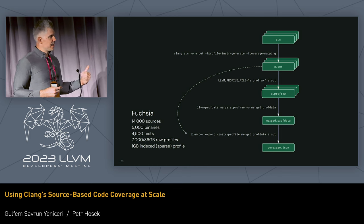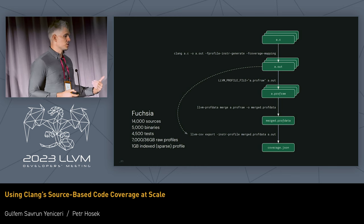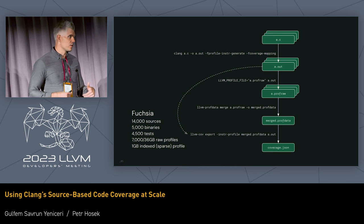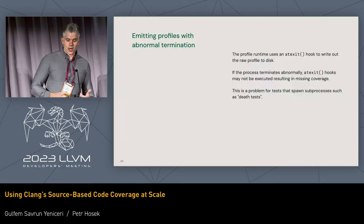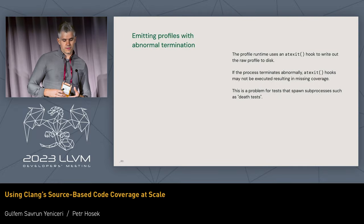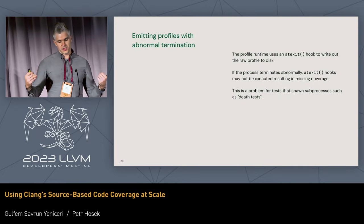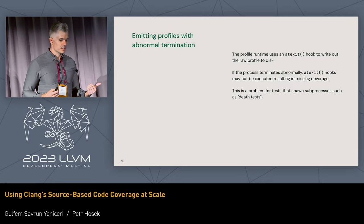At this scale, we've actually started seeing some issues. In the rest of the talk, we'll discuss how we've dealt with those issues by improving Clang-based source coverage. The first thing we noticed after running at this scale is that sometimes we're actually missing profiles.